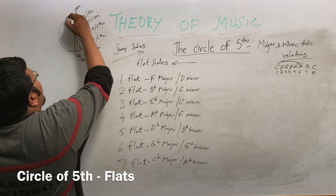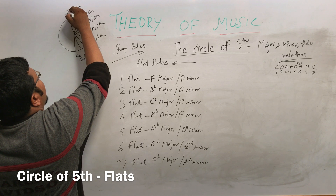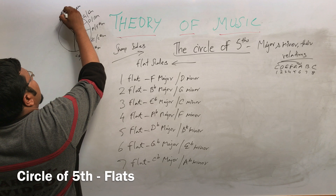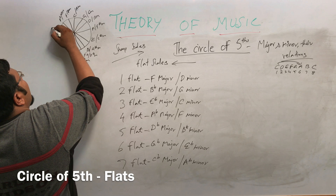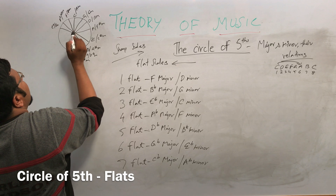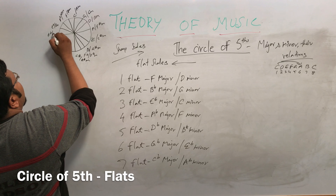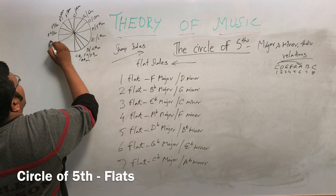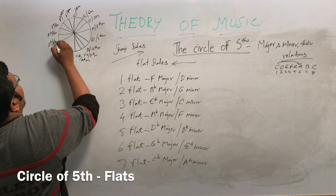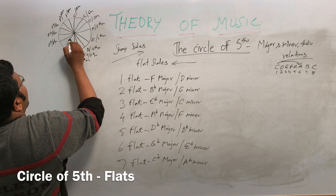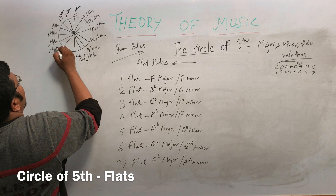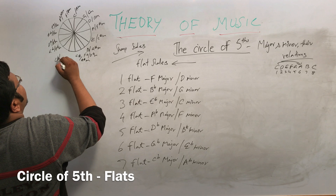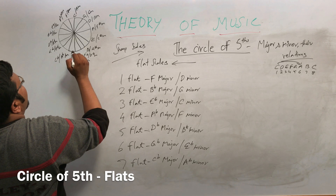Summarizing the flat scale relations: one — F major with D minor; two — B-flat major with G minor; three — E-flat major with C minor; four — A-flat major with F minor; five — D-flat major with B-flat minor; six — G-flat major with E-flat minor; seven — C-flat major with A-flat minor.